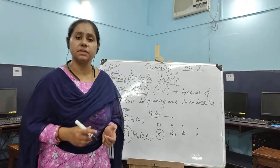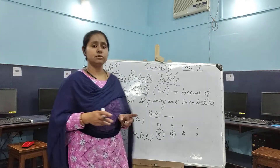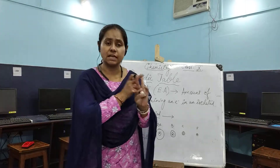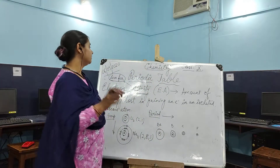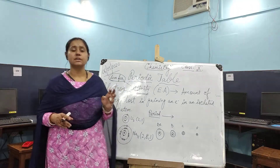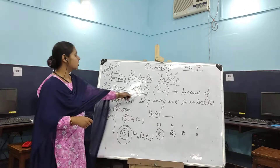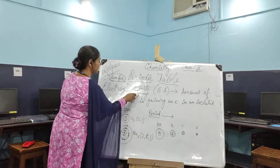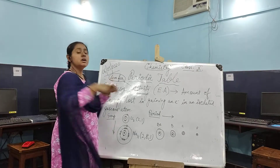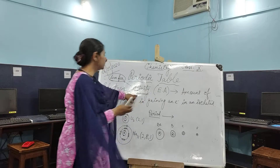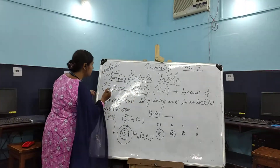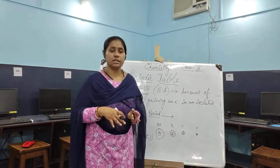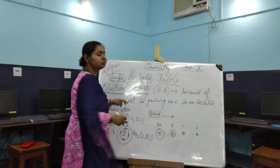We have seen different periodicity in properties. I have already explained atomic radius, ionization potential, and the metallic and non-metallic characteristics. Today I will be discussing the very interesting property we call electron affinity. The word affinity actually means love for or attraction for — in this case, attraction for the electron. That is what we call electron affinity.